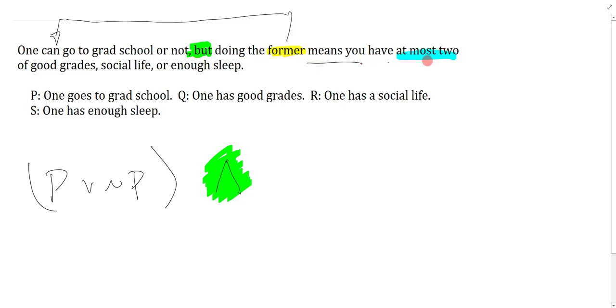Doing the former means you have at most two of - this is just a fancy conditional statement. If you do the former, if you go to grad school, that means that you have at most two of good grades, social life, or enough sleep: Q, R, S. At most two can be symbolized by saying at least two but not all three, but another way is just to say it's not the case that you can have all of them: negation of Q and R and S. That's the quick way of symbolizing at most two of three because as long as you don't have all three you could have none, one, or two of them but you can't have all of them.